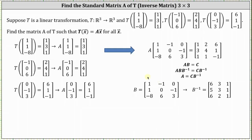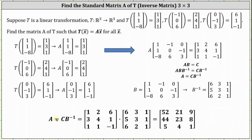So the next step is to find the inverse of matrix B, which is the matrix on the left side of the equation. I found this inverse matrix using technology. The inverse of matrix B is the matrix with rows (6, 3, 1), (5, 3, 1), and (6, 2, 1). So now matrix A equals matrix C times the inverse of matrix B, and the product is the three-by-three matrix with first row (5, 2, 2), second row (4, 4, 2, 3, 8), and third row (5, 4, 1).